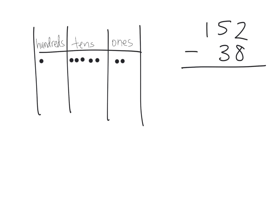So what we're going to do is take 1 of the tens and cash it in for 10 ones — 1, 2, 3, 4, 5, 6, 7, 8, 9, 10. This ten is no longer here because we've cashed it in. So what does that look like? We used to have 2 ones, now we have 12. We used to have 5 tens, now we have 4 tens.